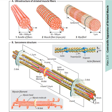On the actin filaments, we have different things attached to it: tropomyosin and troponin. Troponin is divided into 3 main parts: troponin I, troponin C, and troponin T.